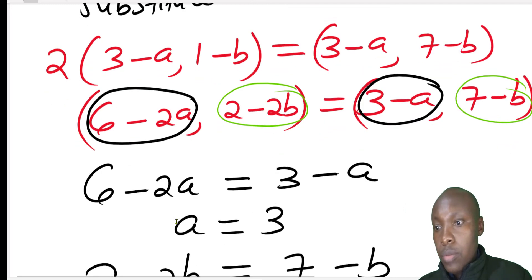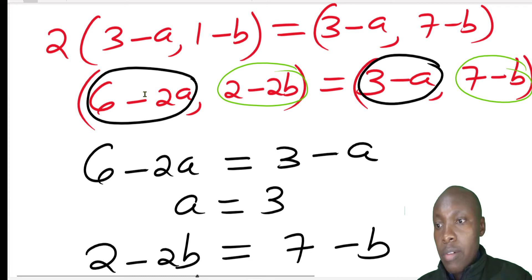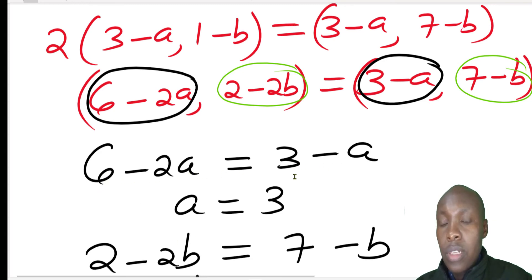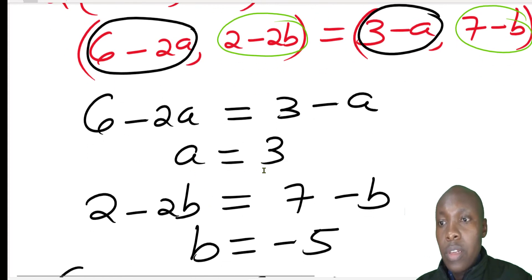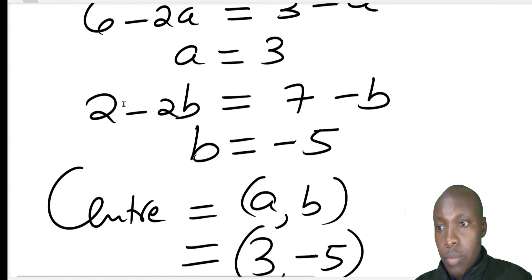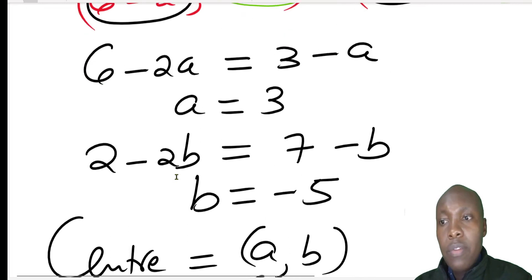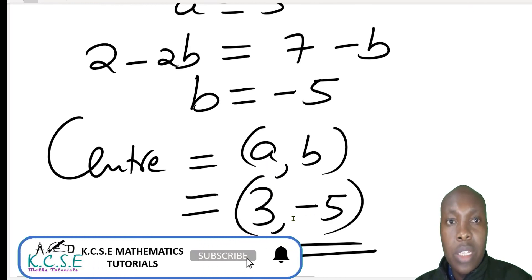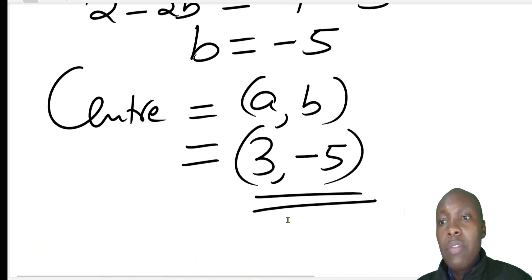From there, equating the x-components: 6 − 2A = 3 − A, which gives A = 3. Equating the y-components: 2 − 2B = 7 − B, which gives B = −5. Having obtained A = 3 and B = −5, and since the center was (A, B), the center of enlargement is (3, −5). That is how you find both the scale factor and the center of enlargement.